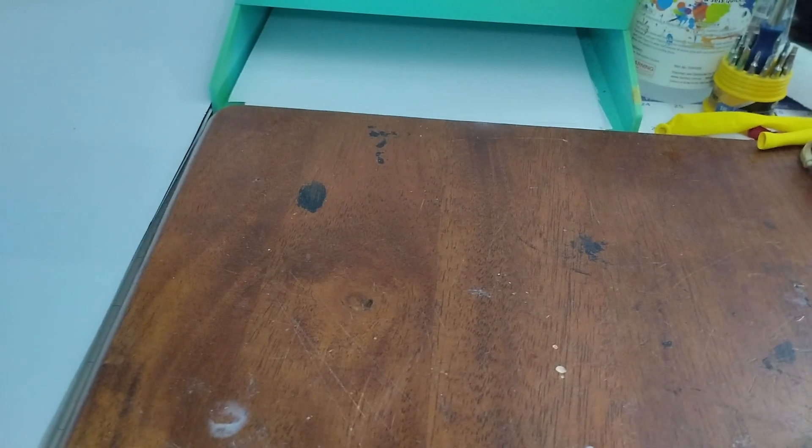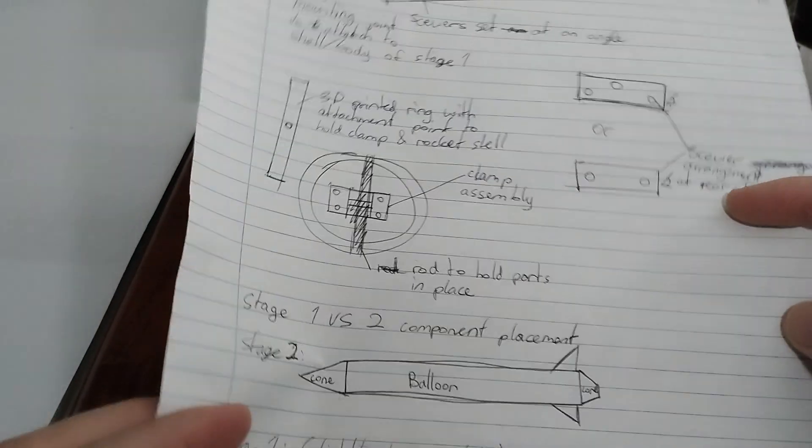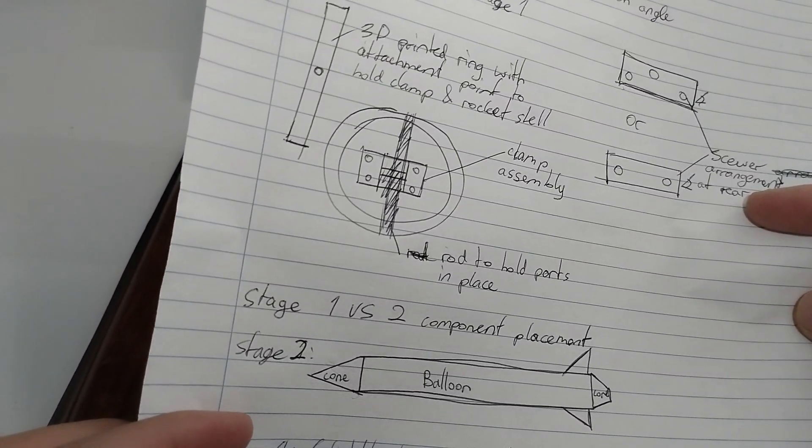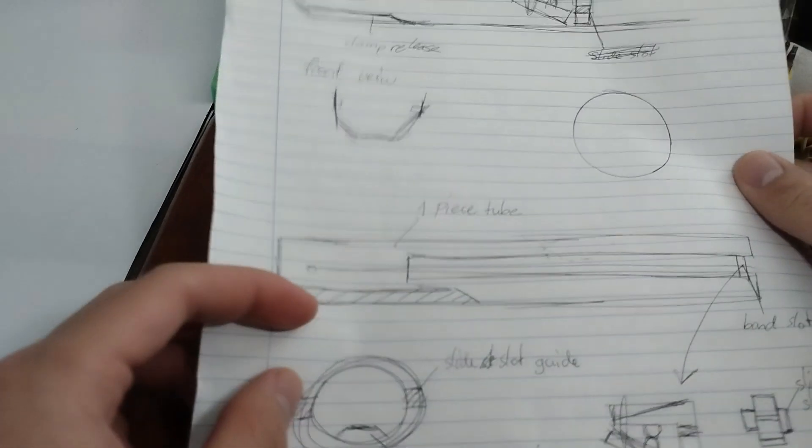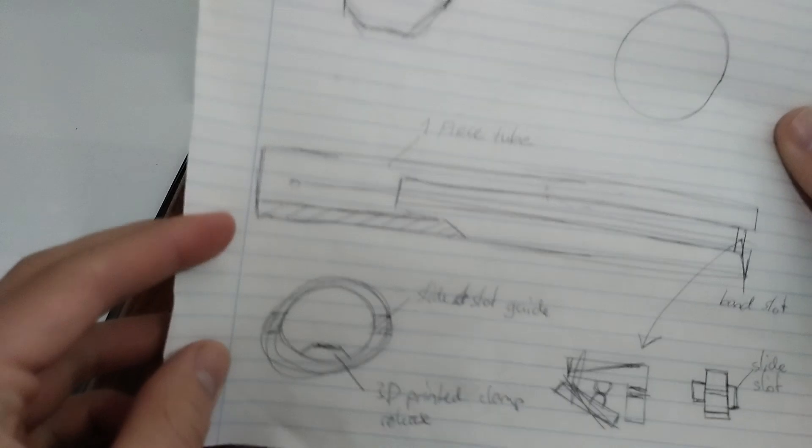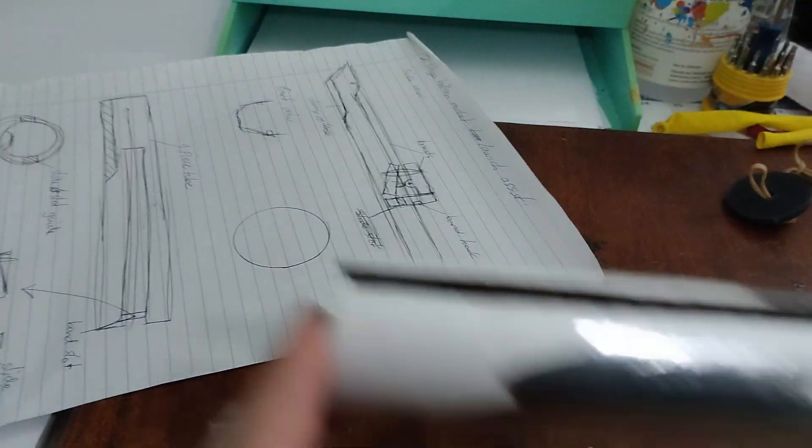Now, in order to solve the assisted launch problem, I developed a launching system for the balloon rocket which would hold down the balloon until it flew out. And with this, I developed an over-engineered launch system that I don't think was necessary, but yeah, here we are.